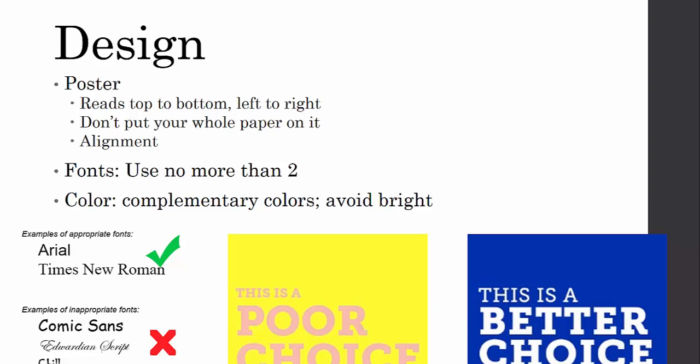Alignment matters. Having randomly spaced boxes with no true alignment makes it distracting to read. For fonts, don't use more than two — maybe one for headings and a different one for body text. That's perfectly fine. But don't go beyond two fonts. Adding more fonts doesn't make it more appealing — it usually just becomes more distracting.